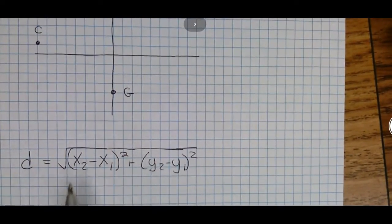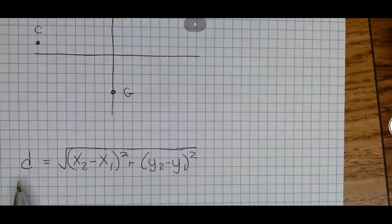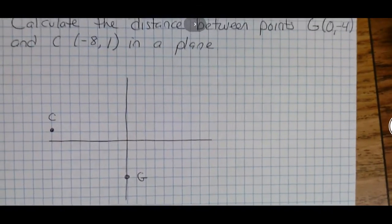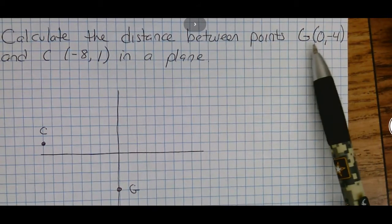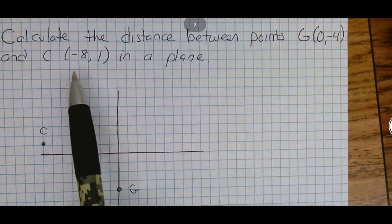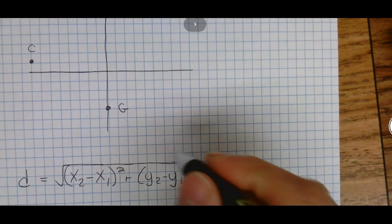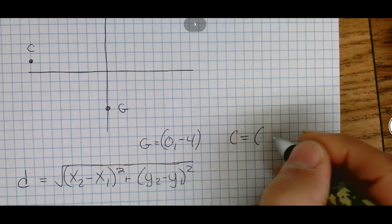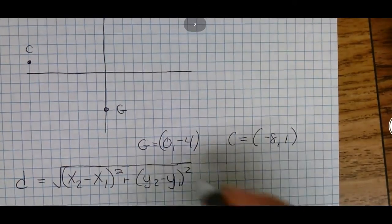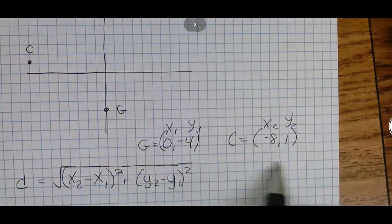When you get this kind of problem in a coordinate plane, use this equation: d = √[(x₂-x₁)² + (y₂-y₁)²]. We compare the X's and the Y's, take the square root of the differences, and that will tell us the distance between them. G is 0, -4 (the X is 0, the Y is -4), and C is -8, 1. So G = (0, -4) and C = (-8, 1). This is our x₁, y₁ and x₂, y₂.